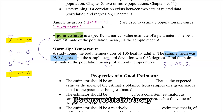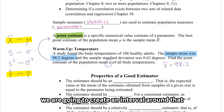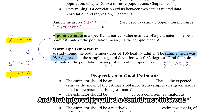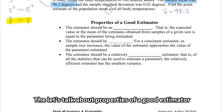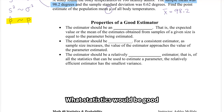So 98.2 degrees is our best estimate for the population mean. But a single value isn't quite enough — it's very restrictive to say the population mean is this because this is my sample mean. So instead of looking at one single value, we're going to create an interval around that sample mean, and that interval is called a confidence interval. But let's talk about properties of a good estimator — the statistics that would be good estimators for parameters.